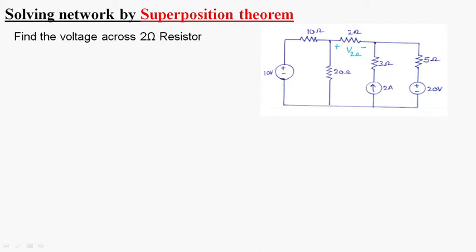According to the superposition theorem, whenever there are multiple sources in the network, we have to remove the voltage source by short circuit and remove the current source by open circuit. This is the basic rule to follow while solving a network using the superposition theorem.